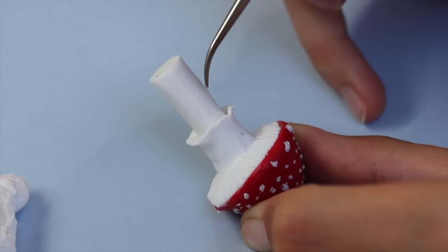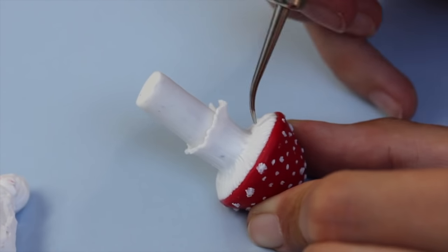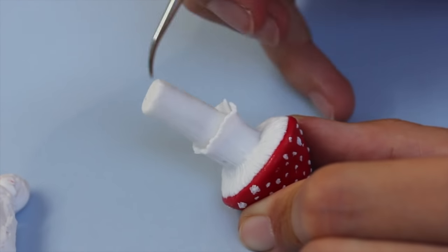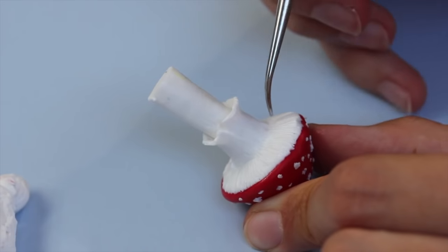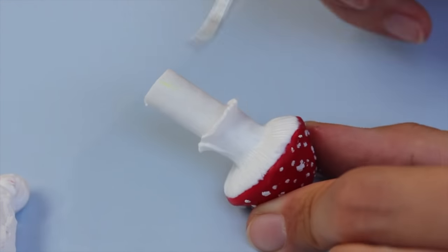Then we are adding some texture to the stem. I just use a simple embossing tool, but a toothpick would do the work as well. Once you're happy, bake.